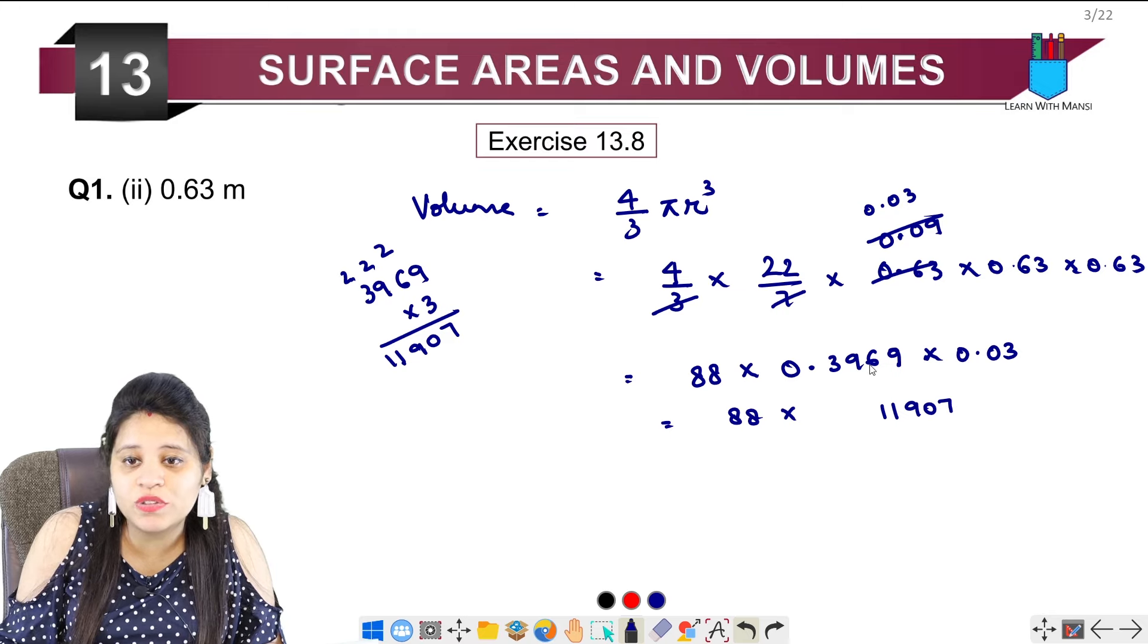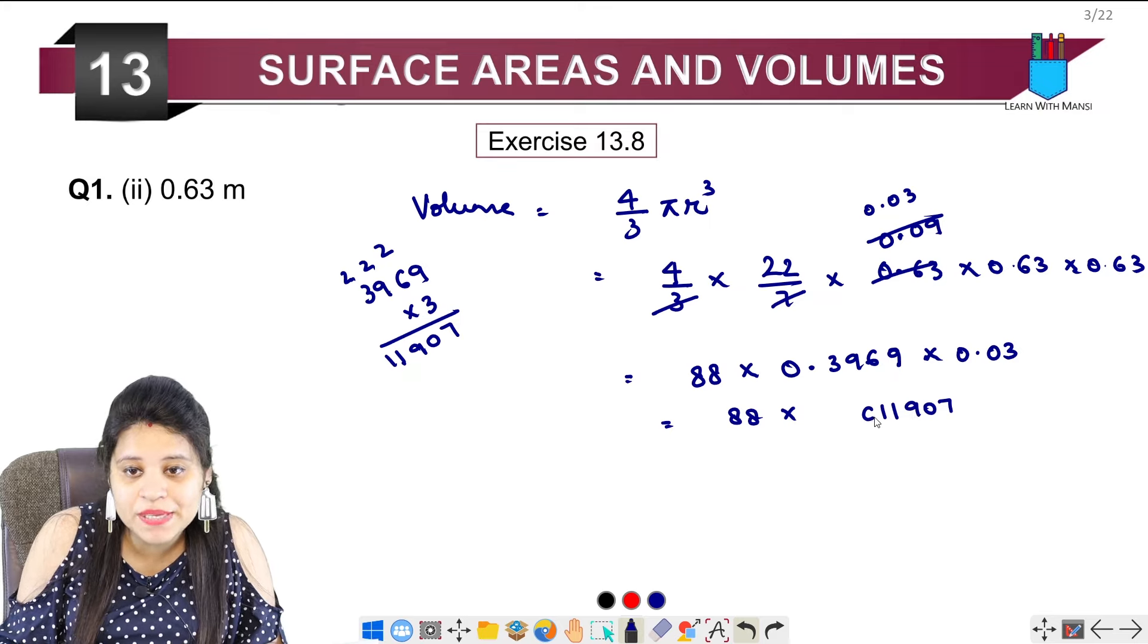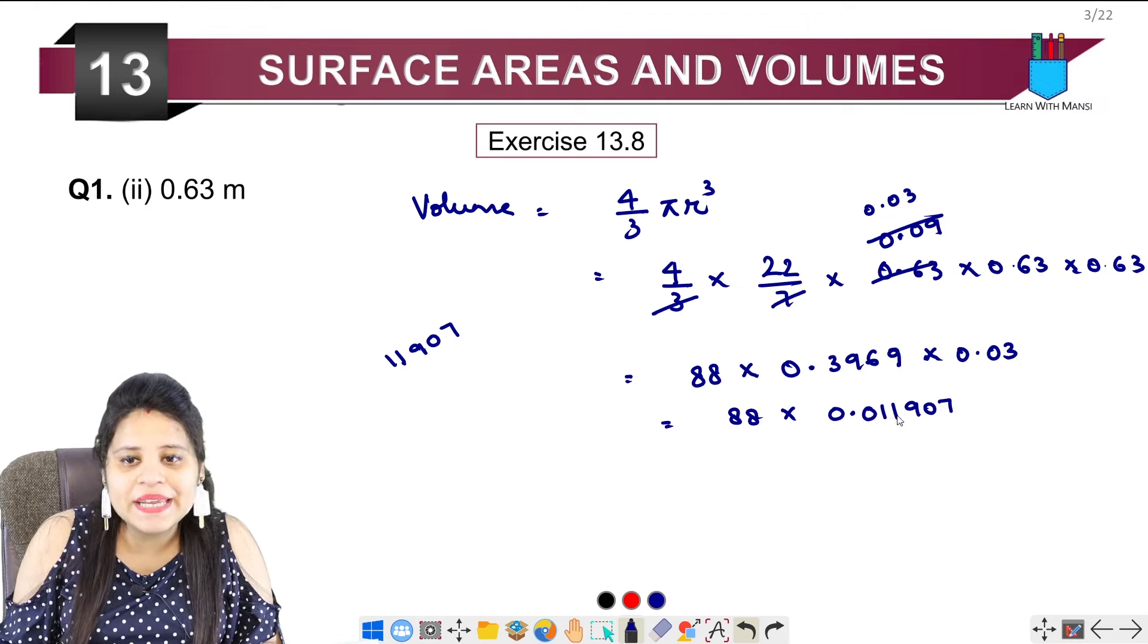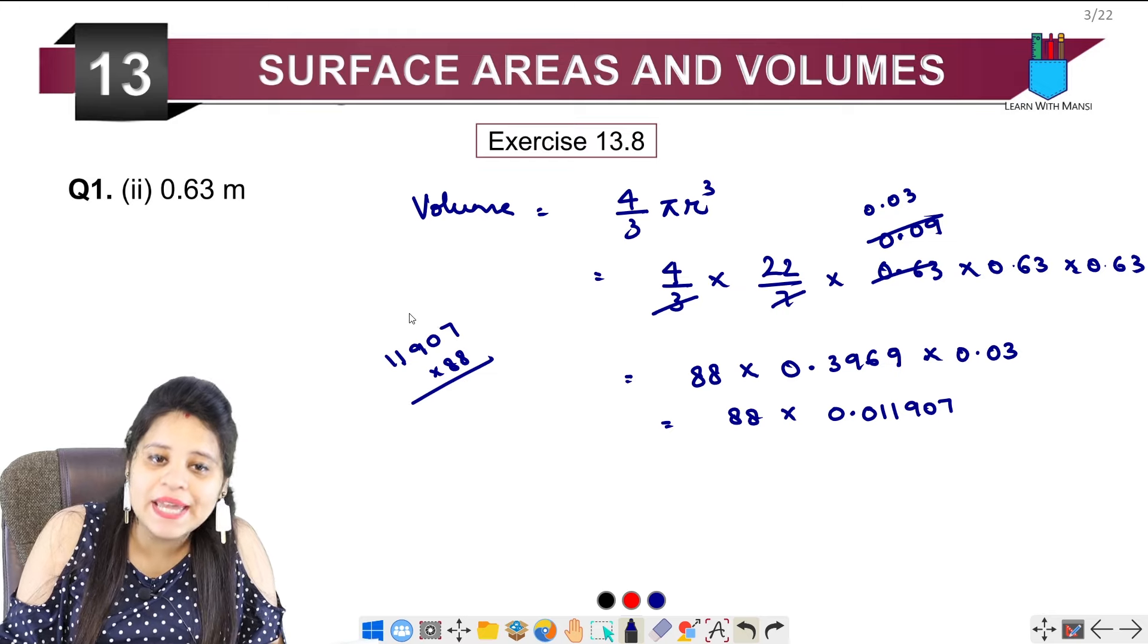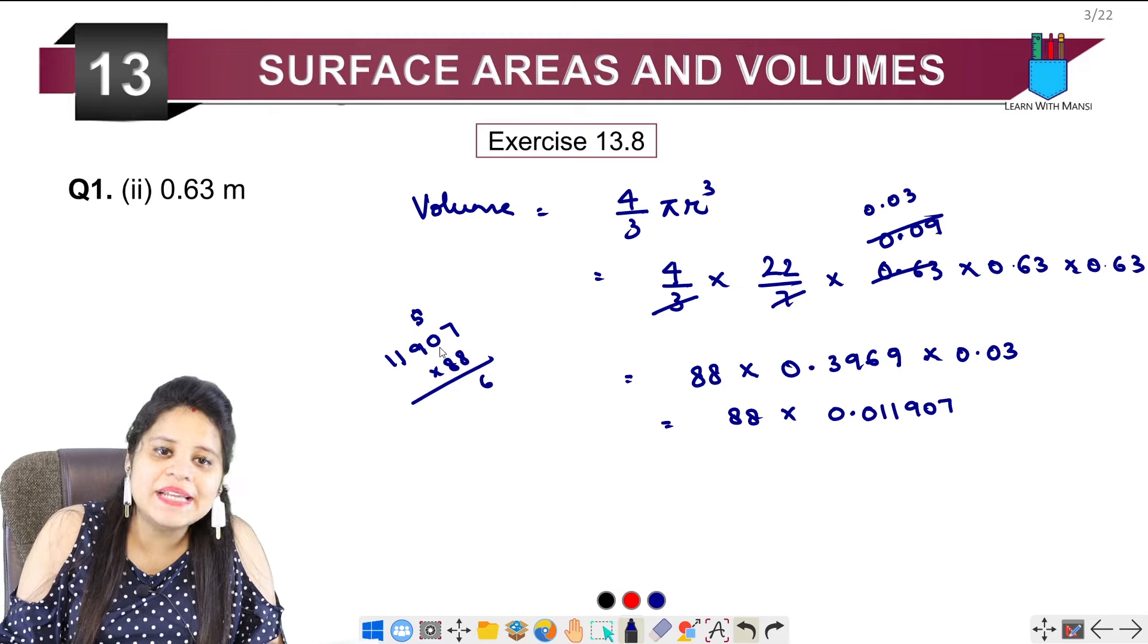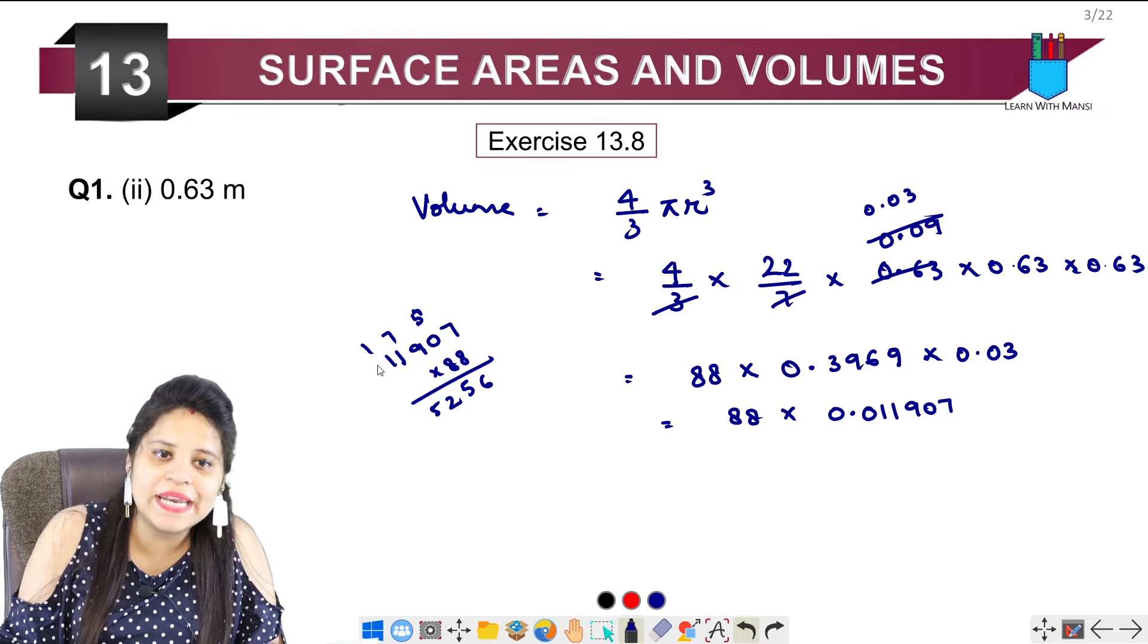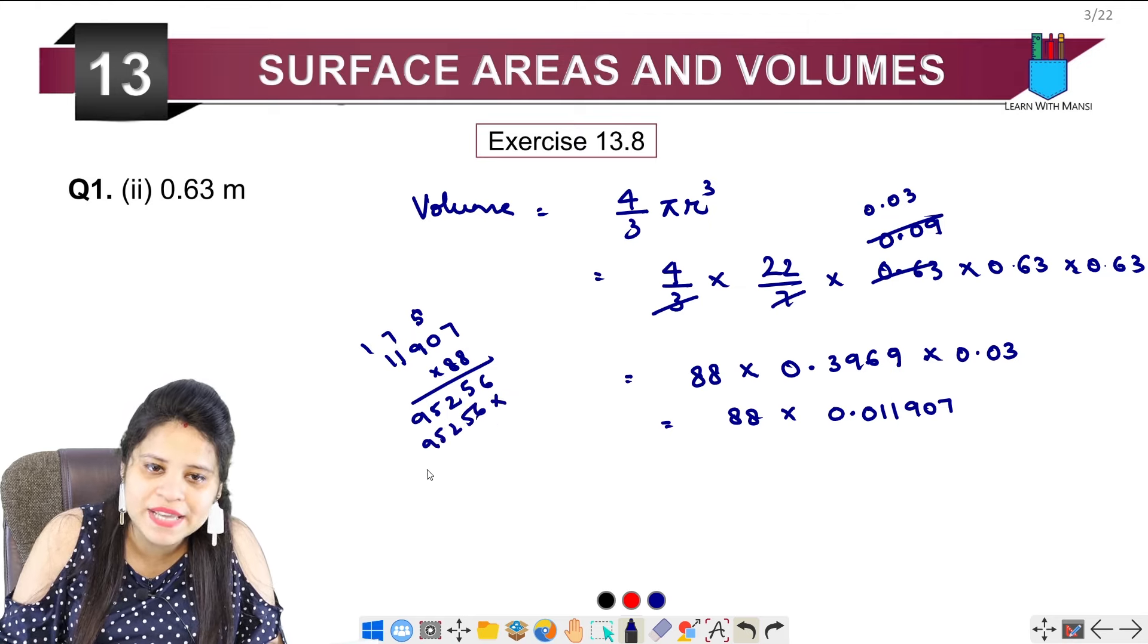Decimal lagayenge to 1, 2, 3, 4, 5, 6, 6 places pehle. So 1, 2, 3, 4, 5 bhi hain yahan par, zero laga lenge aur decimal. Aage multiplication karni hai. Ab hum multiply karenge 11907 ko 88 se and then decimal laga lenge. Isko 88 se multiply karte hain. 8, 7 sa we have 56. Then 8, 0 sa 0 plus 5, 5 aagaya. 8, 9 sa 72. 8, 1 sa 8 plus 7, 15 ho gaya. Again 8, 1 sa 8 plus 1, 9 ho gaya. Phir se 8 se karne hain, same hi aayega.